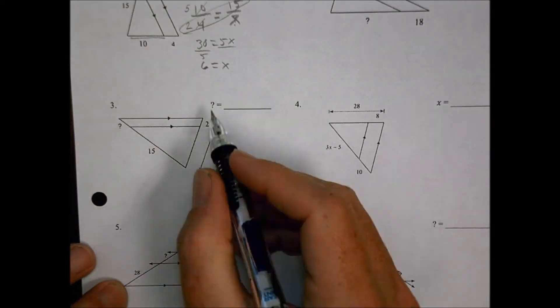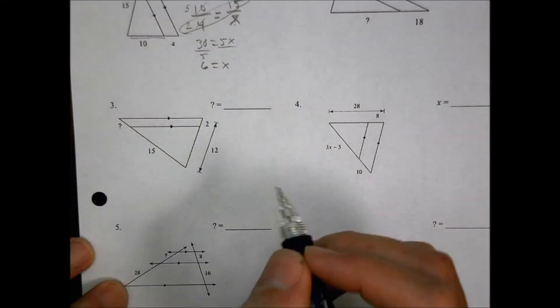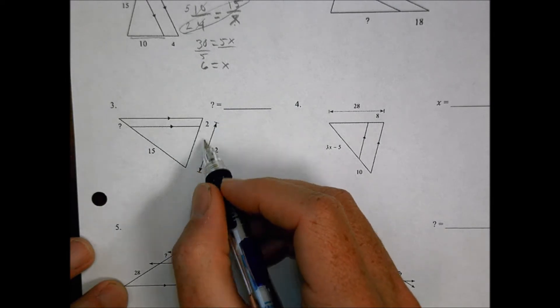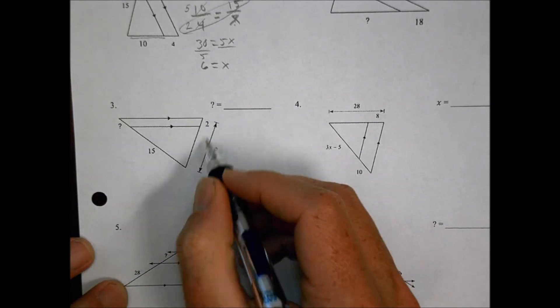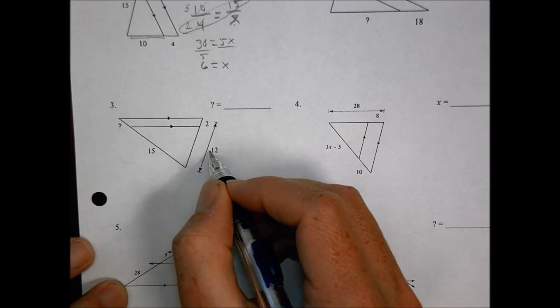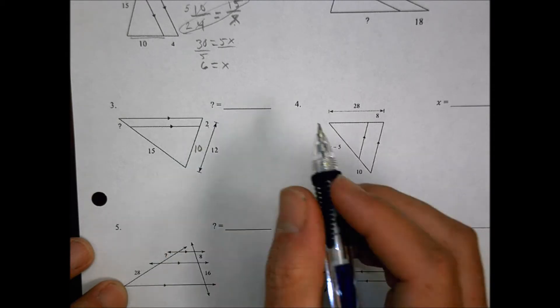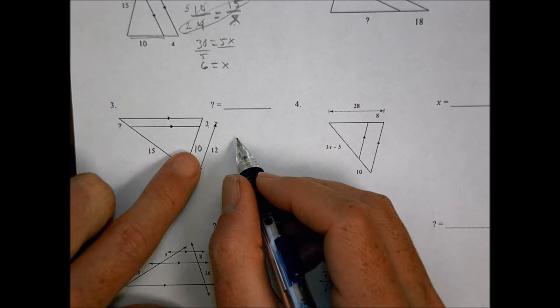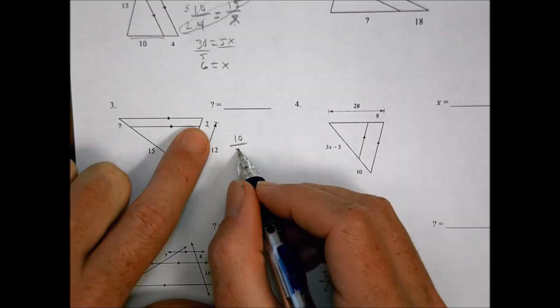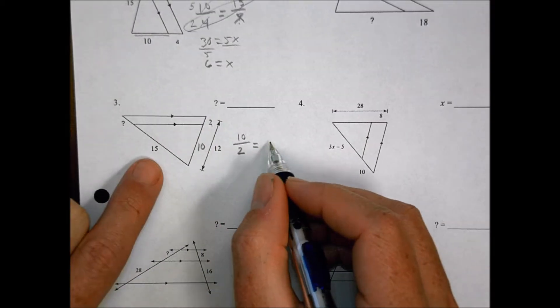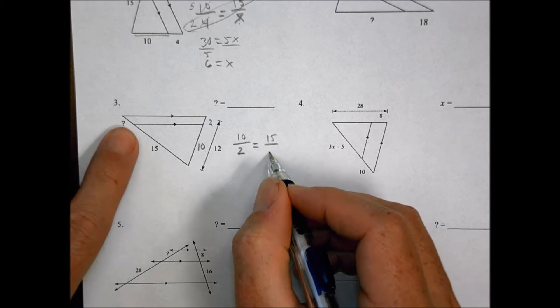Looking down at number 3, I have a short side 15 and a question mark, a 2, and I have a total length here of 12. That means that this length here is what's the difference. 12 minus 2 is 10. That length is going to be 10, so I can do the long length over the little bit and make that equal to the long length here over the I don't know there.